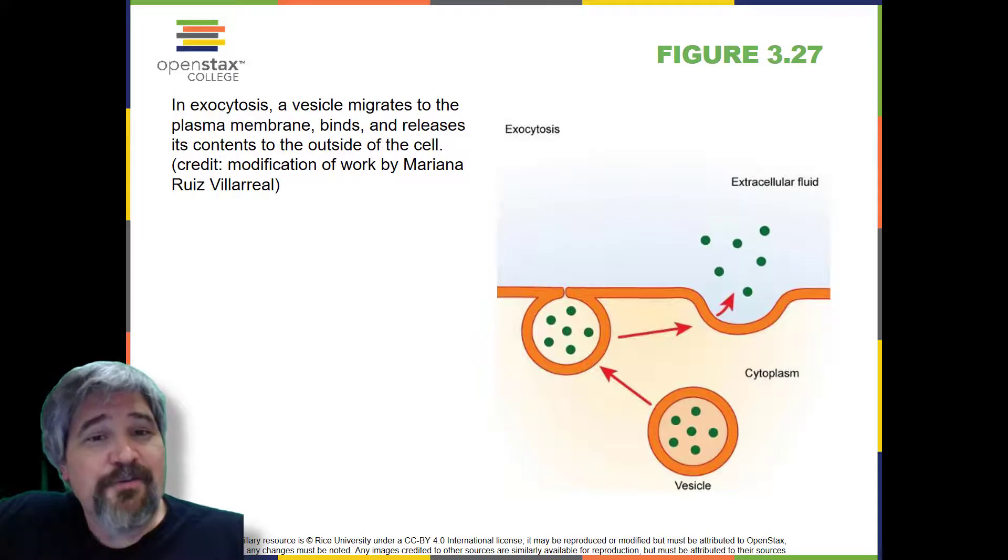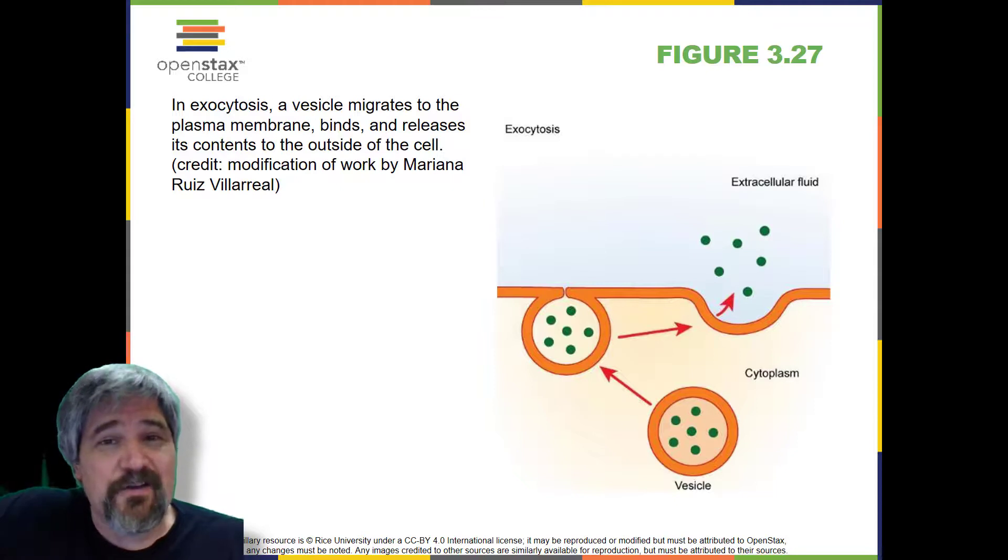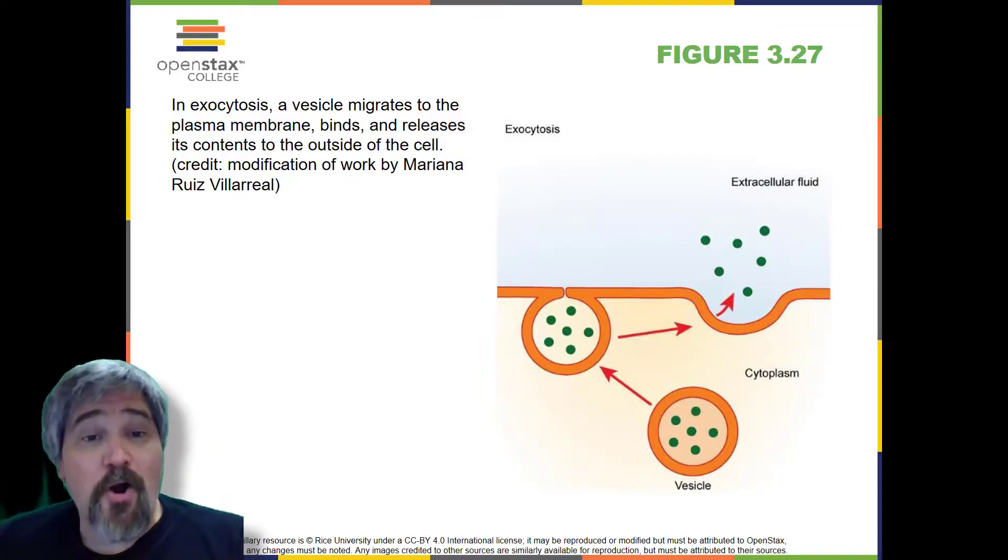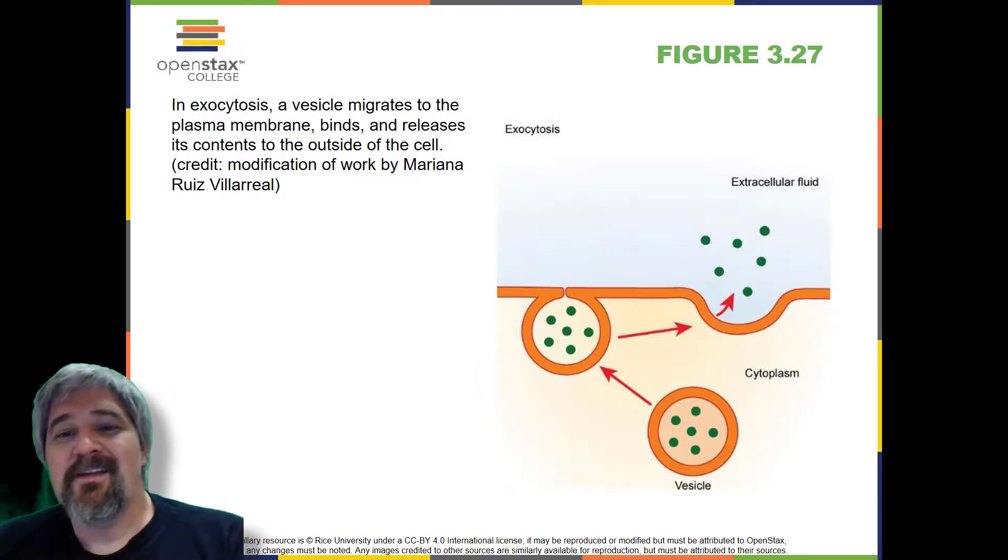Exocytosis. In contrast to these methods of moving material into a cell is the process of exocytosis. Exocytosis is the opposite of the processes discussed above in that its purpose is to expel material from the cell into the extracellular fluid. A particle enveloped in membrane fuses with the interior of the plasma membrane. This fusion opens the membranous envelope to the exterior of the cell and the particle is expelled into the extracellular space.